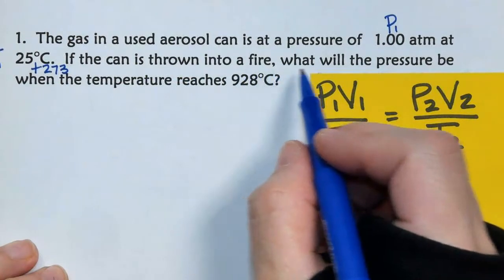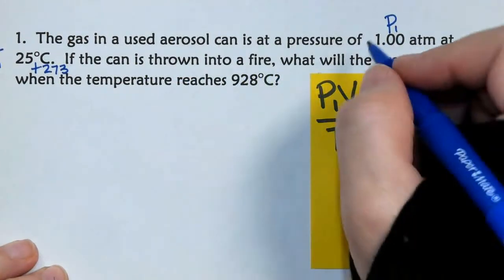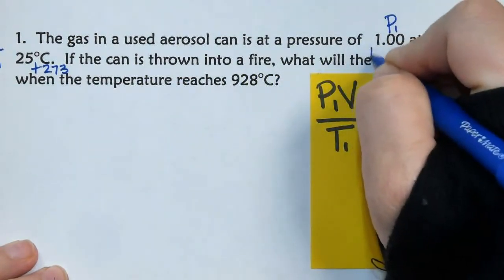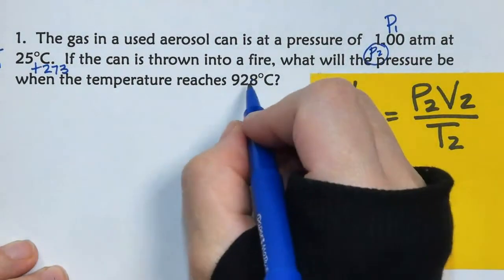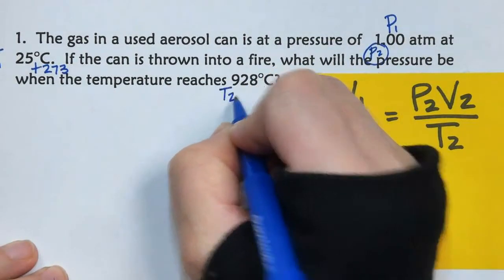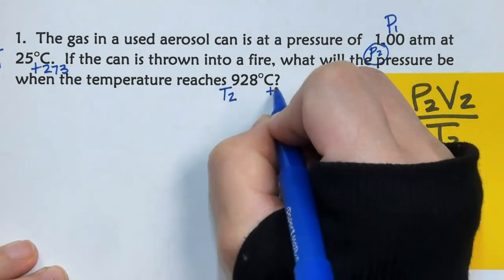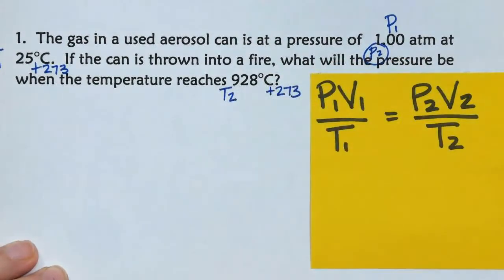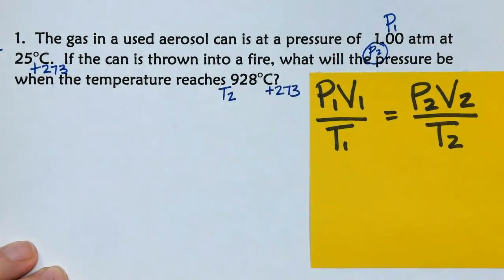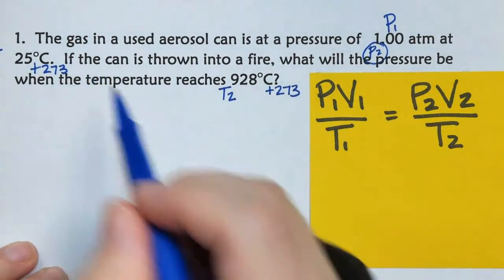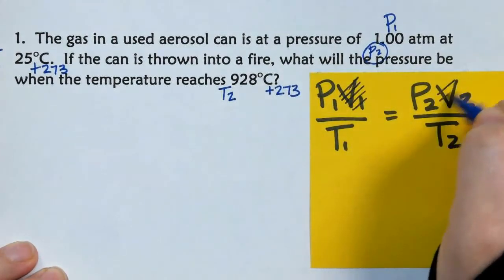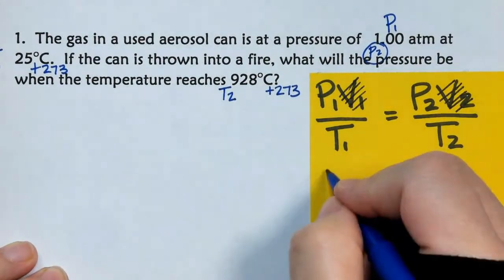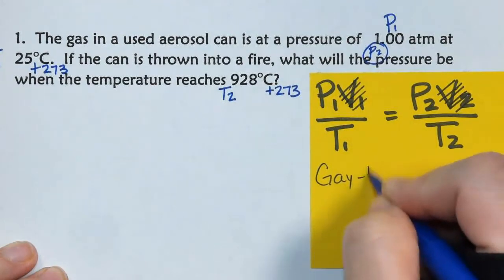If the can is thrown into a fire, what will be the pressure? So, what will be the pressure? P2 is what I'm solving for. And then when the temperature reaches, so here's our T2. Remember, it's Celsius plus 273. So, what you'll notice is we have two pressures, two temperatures, we have no volumes. So, that means that volume is the constant in this problem, and that's how we know that it's a Gay-Lussac's law problem.